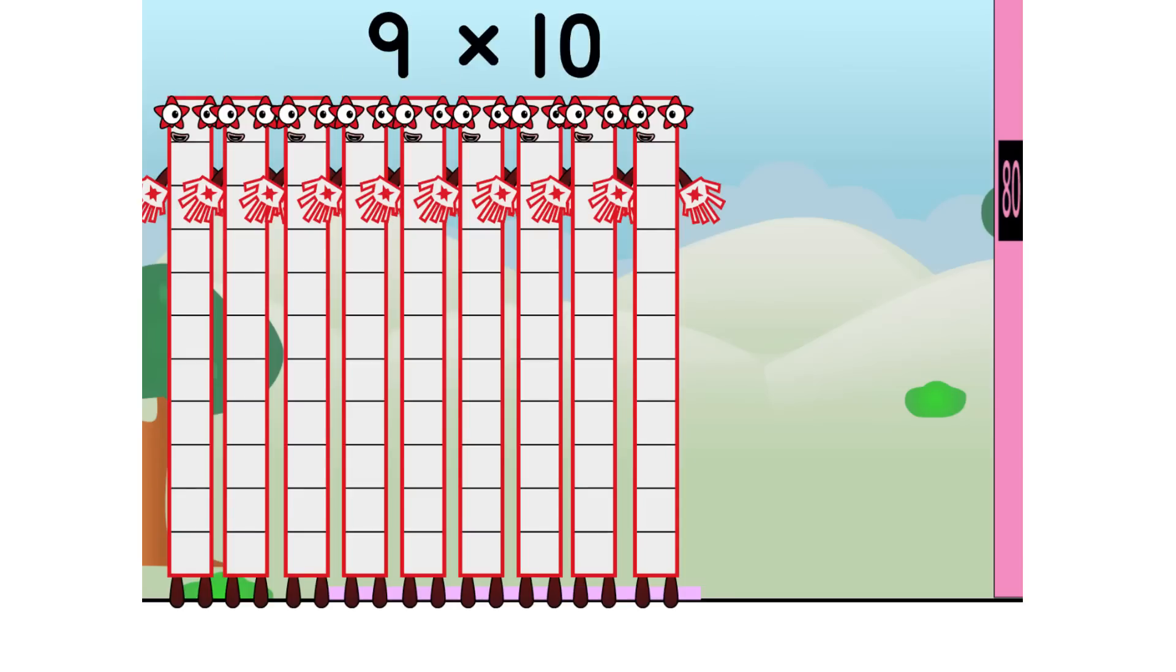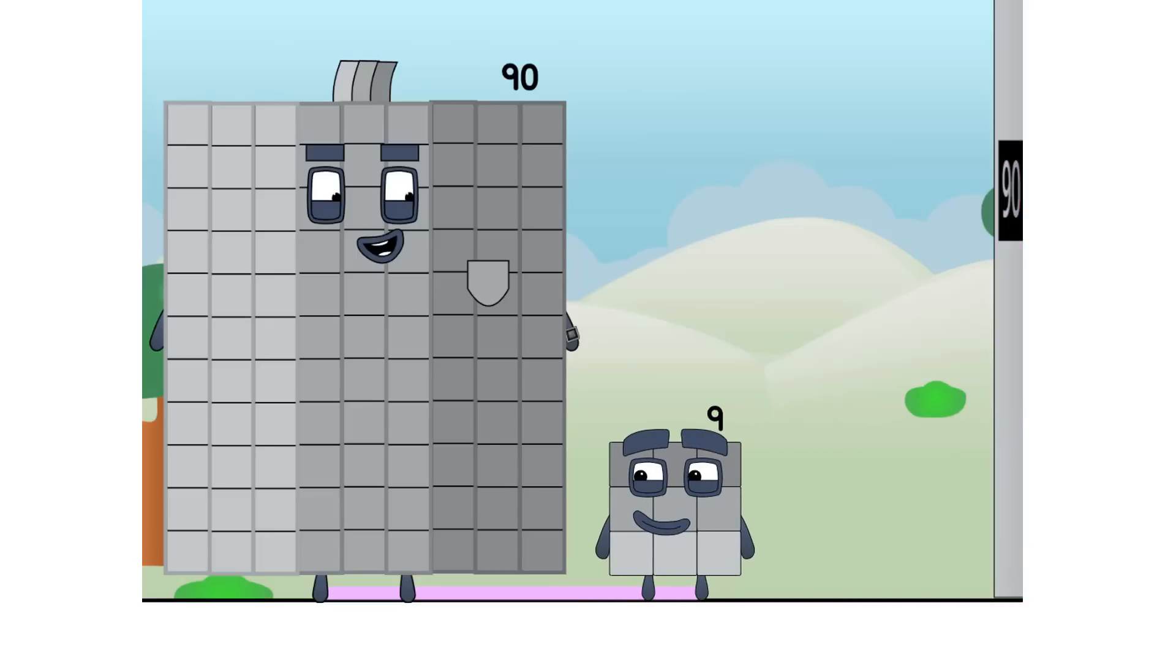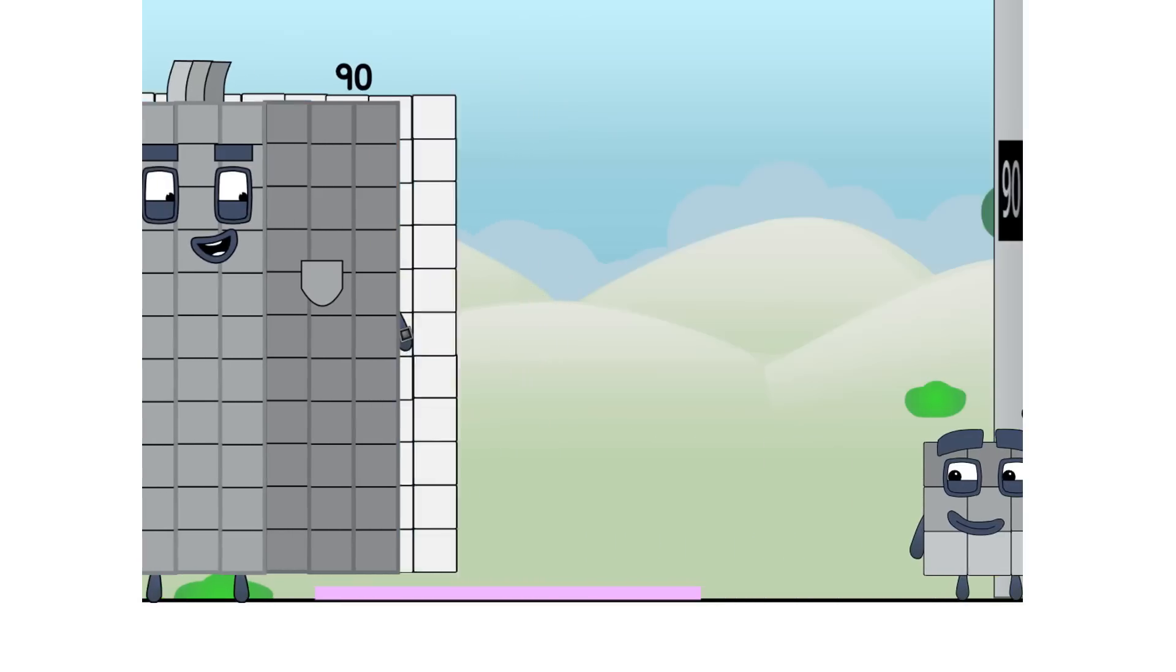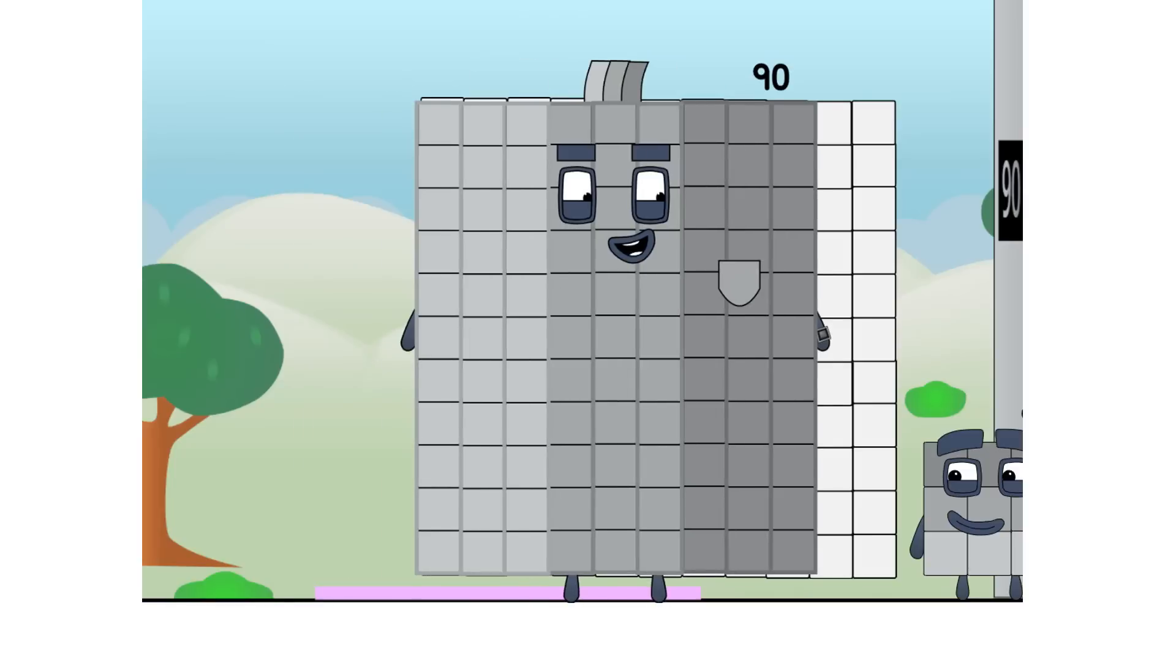9 times 10 equals 90. I am 90. You won't believe your eyes. Are you a square or not? I can't tell. This grid is 10 blocks by 10 blocks, but I am two columns short.